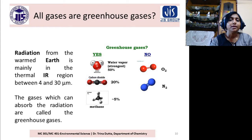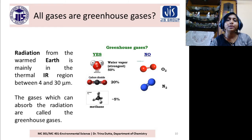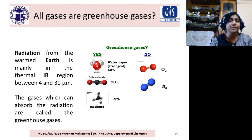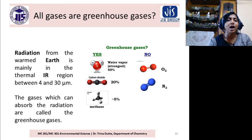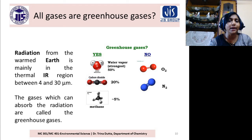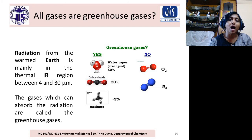So which gases will be greenhouse gases? Simply stated: those which can absorb the Earth radiation are the greenhouse gases. You have to think of two parts — one is incoming solar radiation, and another is outgoing Earth radiation.